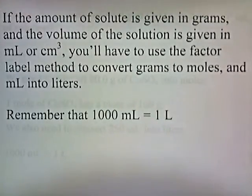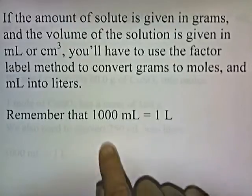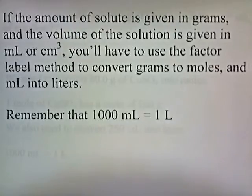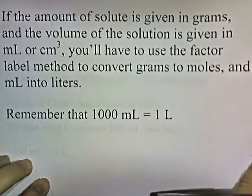If the amount of solute is given in grams and the volume of the solution is given in milliliters or cubic centimeters, you'll have to use the factor label method to convert grams to moles and milliliters into liters. Remember that 1,000 milliliters equals one liter. So when you calculate the molarity of a solution, you want to divide moles by liters, but sometimes you're given grams and milliliters instead.